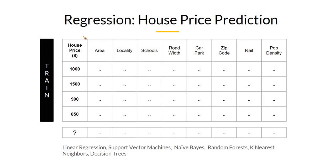Let us understand regression with an example of a real world problem, which is housing price prediction. You want to build an ML solution that will predict the price of a house, given various different characteristics about the house or the locality.